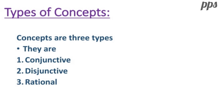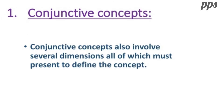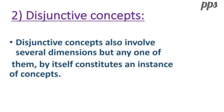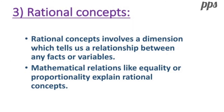Concepts are of three types. They are conjunctive, disjunctive and rational. In conjunctive concepts, several dimensions must be present to define the concept. In disjunctive concepts, involvement of several dimensions will be there, but any one of them by itself constitutes an instance of the concept. Rational concepts involve a dimension which tells a relationship between any facts or variables. Mathematical relations like equality or proportionality can explain rational concepts.